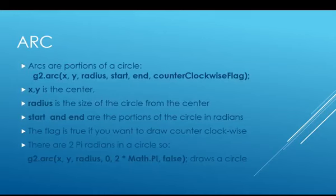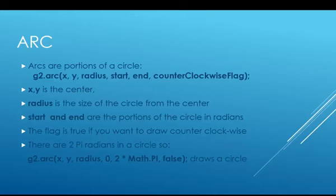Now let's start talking about our arc. An arc is a portion of a circle. The JavaScript function is g2.arc(x, y, radius, start, end, counterclockwise_flag). G2 is our graphics context — all the graphic functions are methods that G2 has. Inside methods where we pass the context in, we use the word 'context' for the parameter. So it will either be context.arc or g2.arc, depending on whether we pass the value in to an external method.